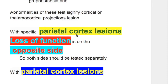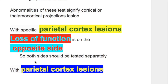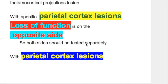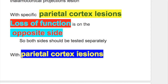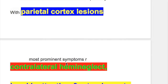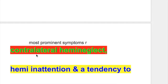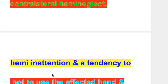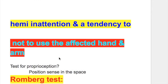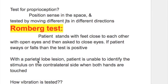With a specific parietal cortical lesion, loss of function is on the opposite side, so both sides should be tested separately. With a parietal cortex lesion, the most prominent symptoms are contralateral hemisensory neglect, hemisensory inattention, and a tendency not to use the hand and arm of that side. With a parietal lobe lesion, the patient is unable to identify the stimulus on the contralateral side when both hands are touched simultaneously.